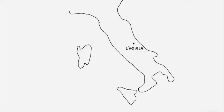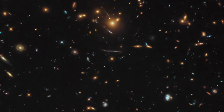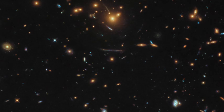Xenon-1-ton was operated deep underground at the INFN Laboratorio Nazionale del Gran Sasso in Italy from 2016 to 2018. It was primarily designed to detect dark matter, which makes up 85% of the matter in the universe.